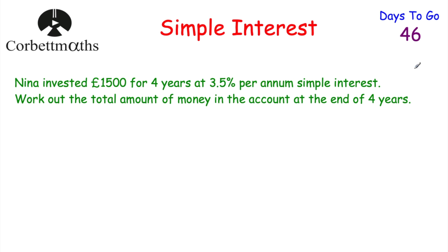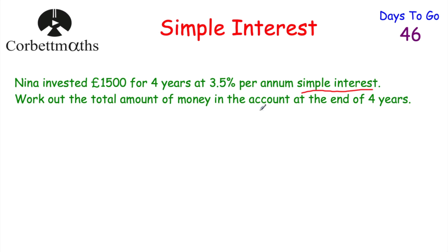Let's have a look at the next question — this is a calculator question for you to try, so press pause and try this question now. Nina invested £1,500 for four years at 3.5% per annum simple interest. Work out the total amount of money in the account at the end of four years. It's simple interest, so we just need to work out what 3.5% of the money invested is — that's how much interest it'll earn every single year — then multiply by four to find the total interest, and then add it on.